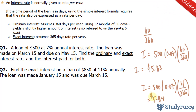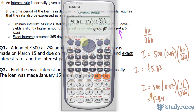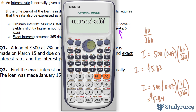That's an interesting result, because you're probably wondering: if the banker's rule yields slightly higher interest, how come the exact interest here is one cent higher than the previous calculation? What banks will do with loans is stipulate they're using the exact time along with the banker's rule of 360. Using 61 over 360 instead of 365 yields a slightly higher amount of $5.93.